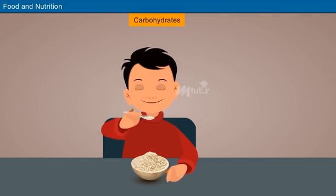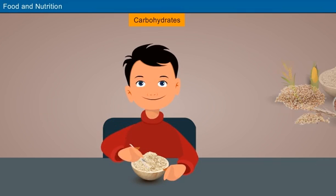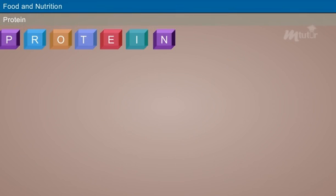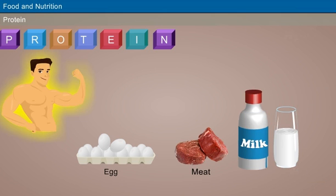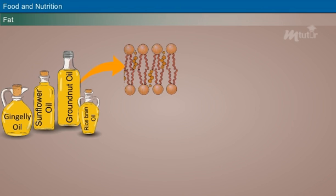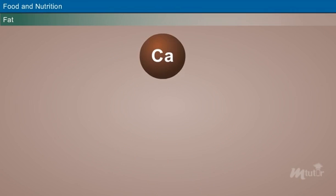Carbohydrates: the primary function of carbohydrates is to supply energy. Cereals and pulses are rich sources of carbohydrates. Protein: the primary function of protein is tissue building. Egg, meat, and milk are rich sources of protein. Fat: fats assist in the synthesis of phospholipids and are stored in adipose tissues, which are later used for energy creation.